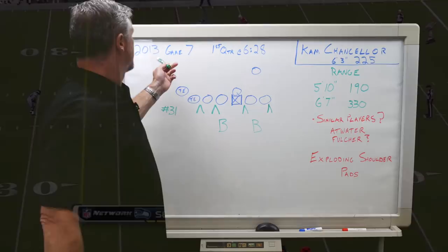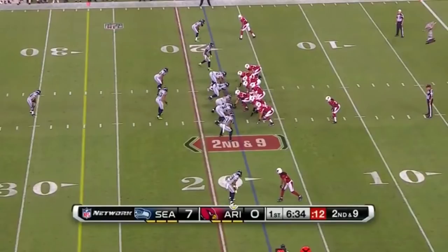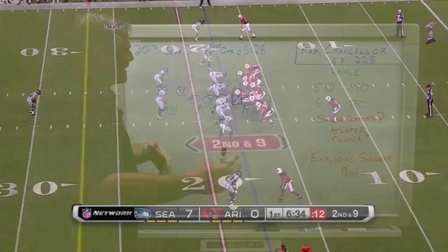This is 2013 game seven. Seahawks ended up winning this game. It was at Arizona and this was in the first quarter, about 6:28. It's second and nine. This is one of those kind of mixed downs where you're not sure whether it's a run or a pass.